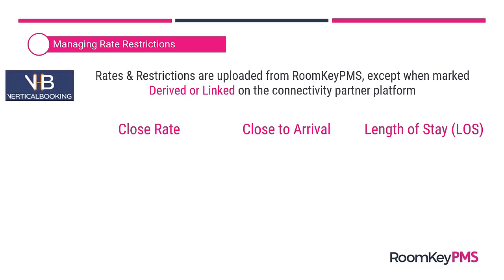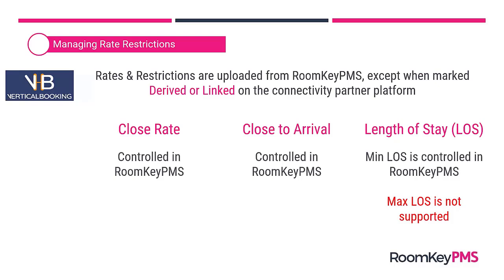For Vertical Booking, rates and restrictions are uploaded from Roomkey unless the rate plan is marked as derived or linked on the Vertical Booking platform. Vertical Booking accepts all restriction types; however, when applying a minimum length-of-stay, you can control that in Roomkey, but Vertical Booking does not accept any maximum length-of-stay restrictions. If you apply a maximum length-of-stay in Roomkey, that restriction is not supported by Vertical Booking — they only support minimum length-of-stay.